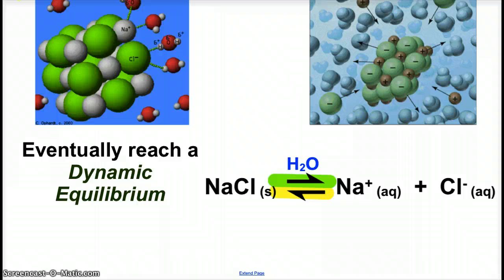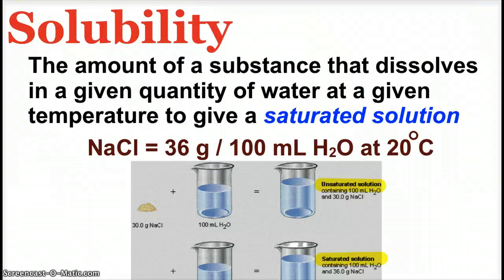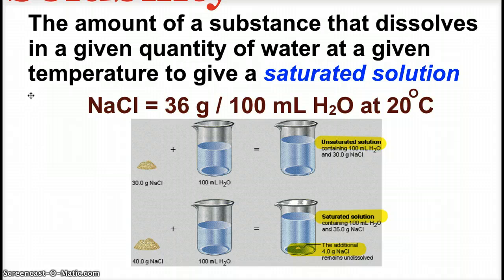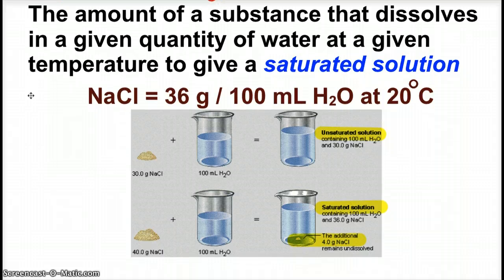At dynamic equilibrium, we have what's called a saturated solution — the amount of a substance that dissolves in a given quantity of water at a given temperature. Temperature can affect how much solute dissolves. For sodium chloride, we can dissolve 36 grams into 100 milliliters of water at 20 degrees Celsius.